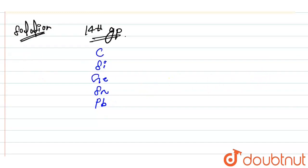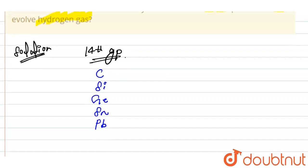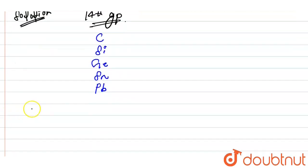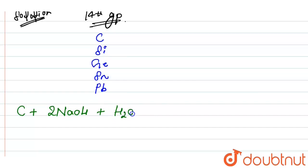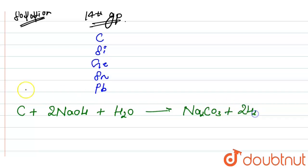So first we react the carbon atom with aqueous NaOH solution. When carbon reacts with aqueous NaOH, it will give hydrogen gas. So here the hydrogen gas is evolved.